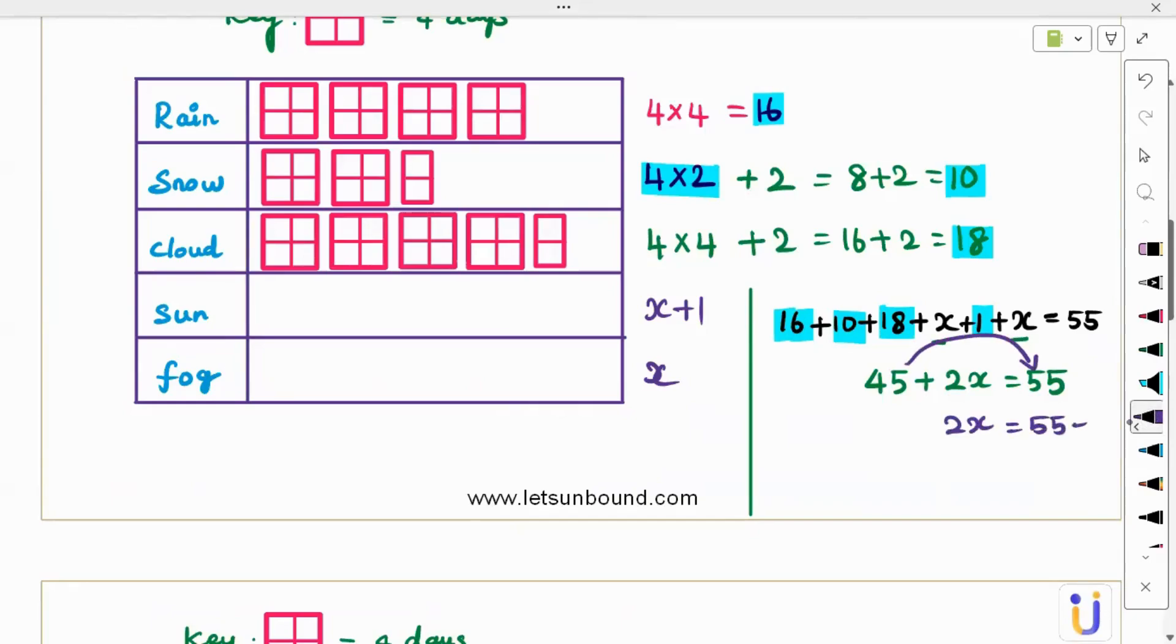Then 2x is 55 minus 45, which is 10. And x is equal to 10 divided by 2, which is 5. So I got x. X means fog, so fog is 5. Of course the sun will be one more than that, which is 6.